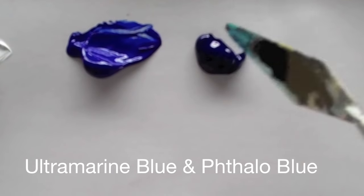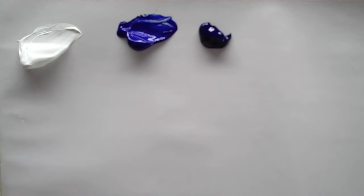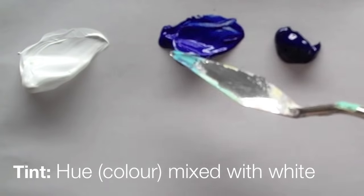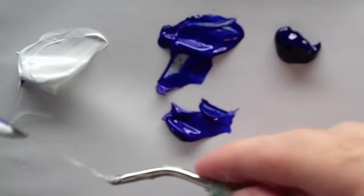When we start to add white to them though, to create a tint, this is where you can really see which way the bias is on each pigment.